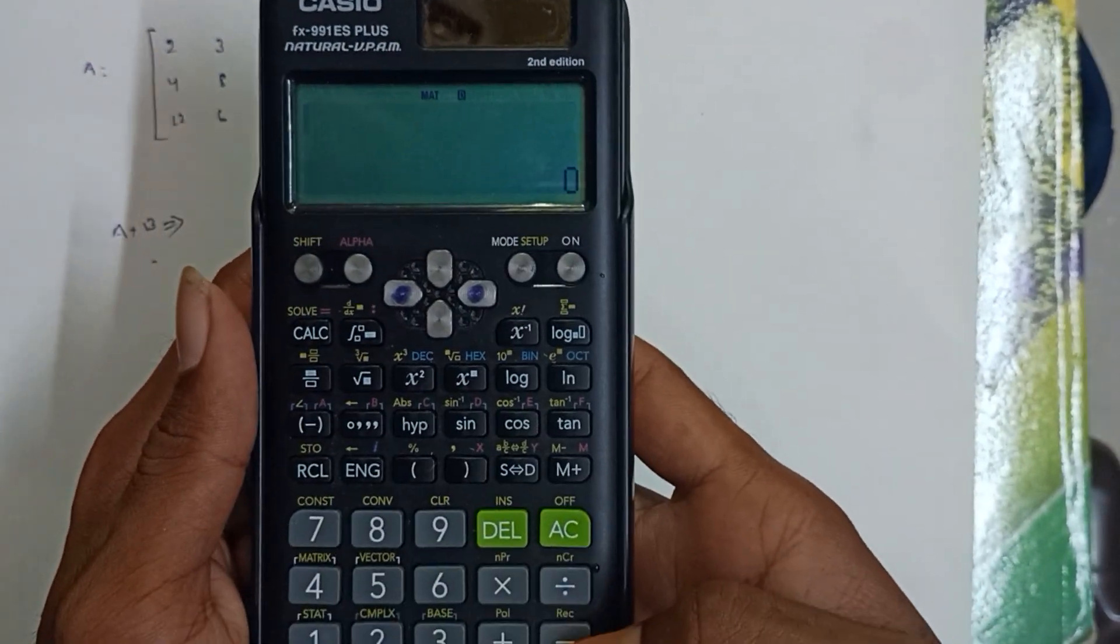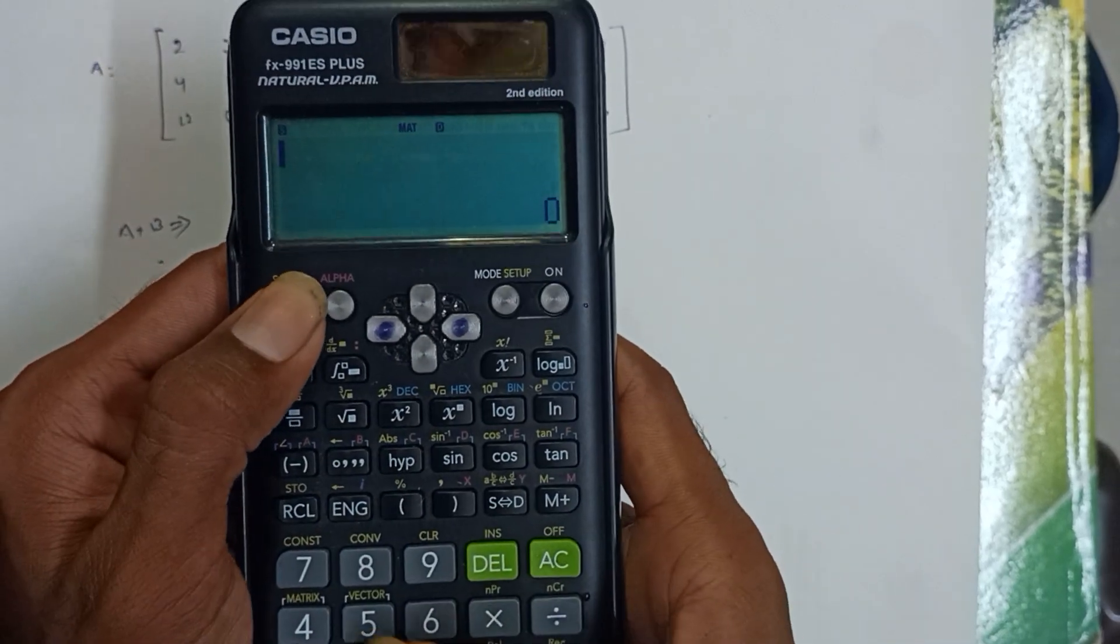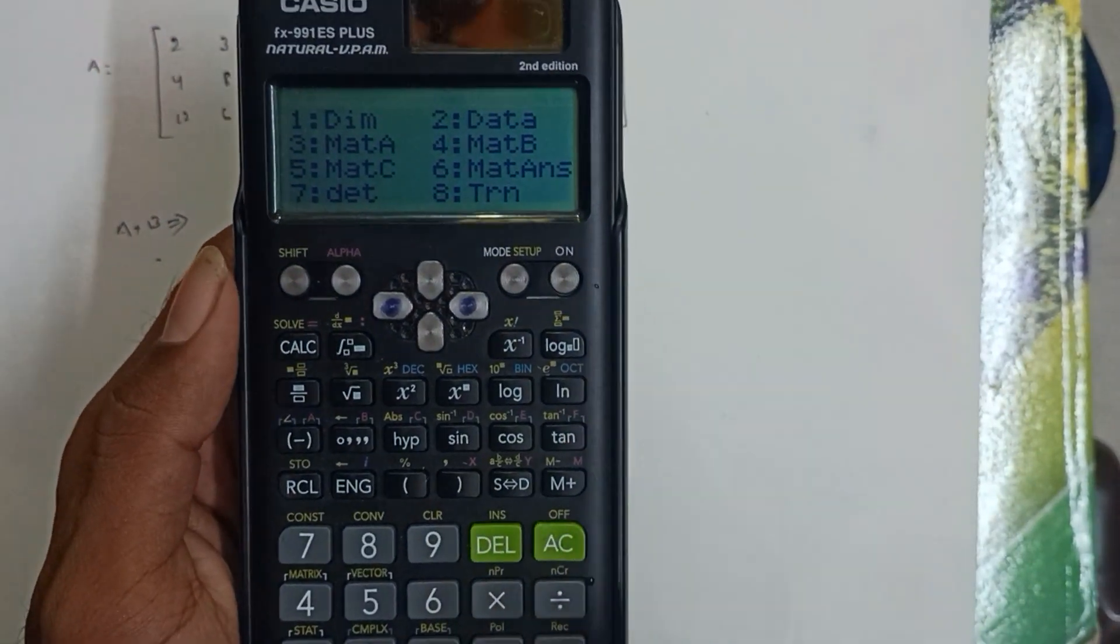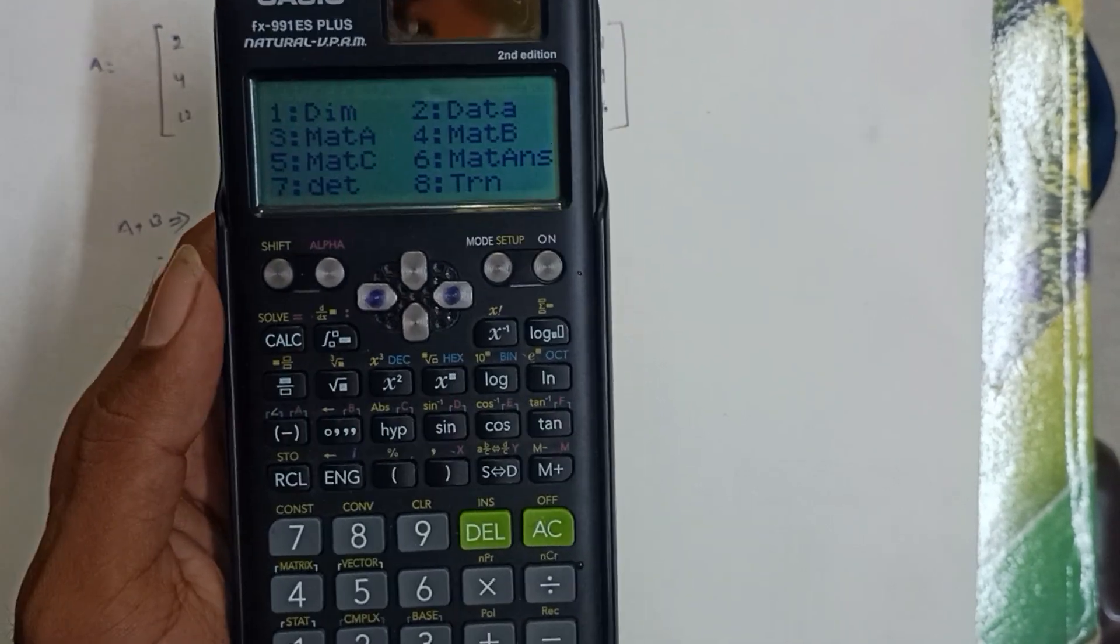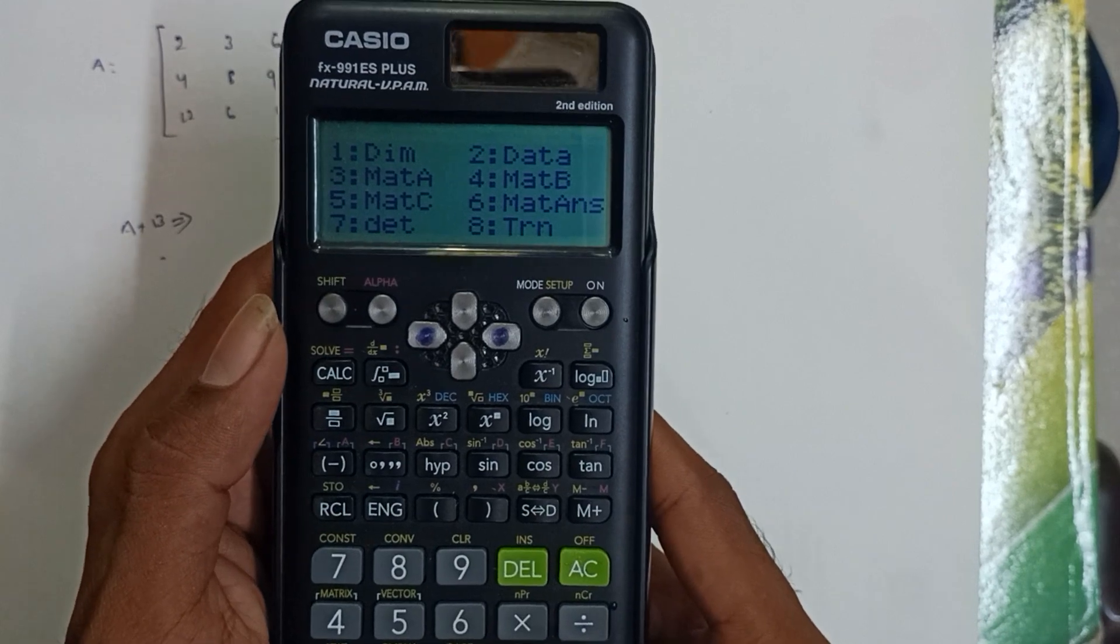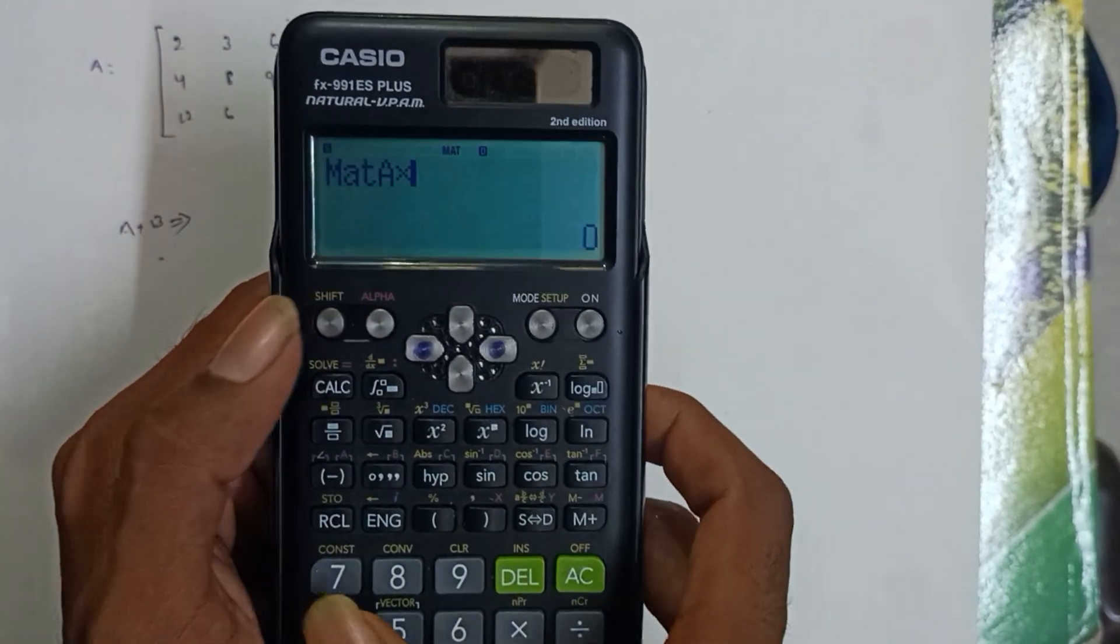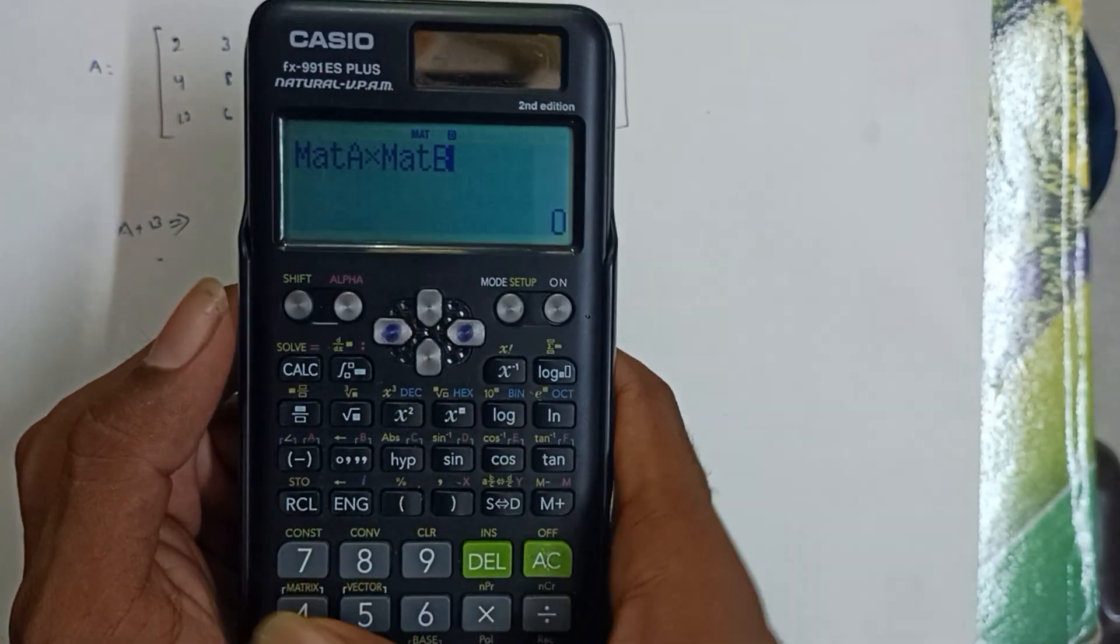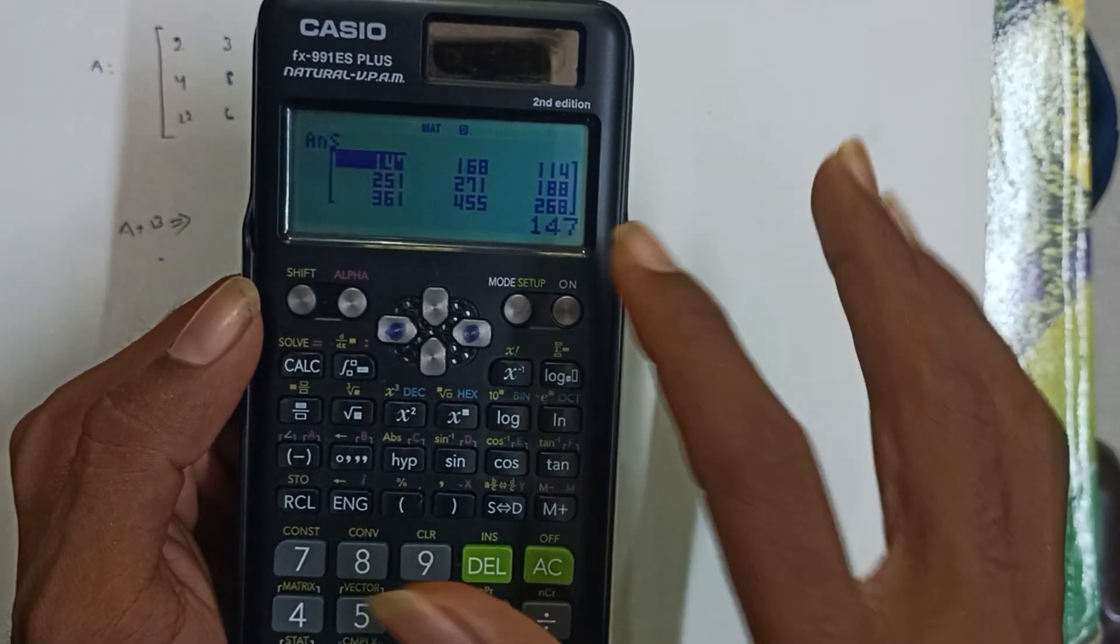For subtraction, press Shift plus Matrix. The operation is the same - Shift, Matrix A (option 3), minus sign, Shift, Matrix B (option 4), then equal to. This gives us the subtraction result.